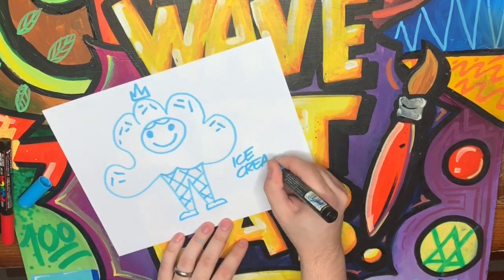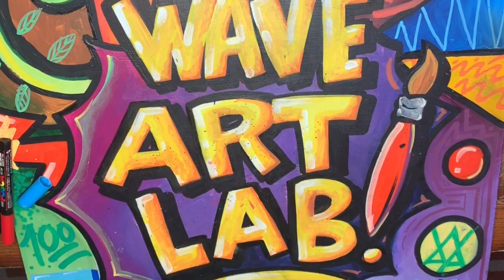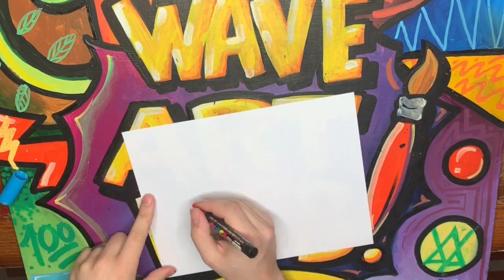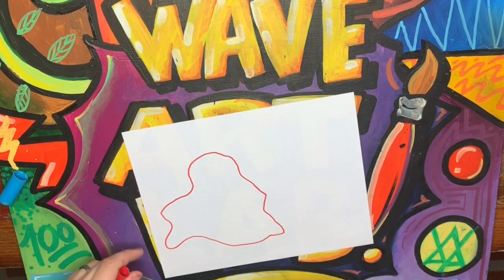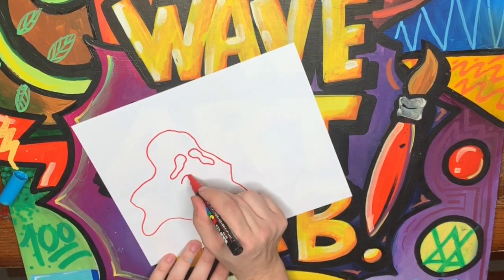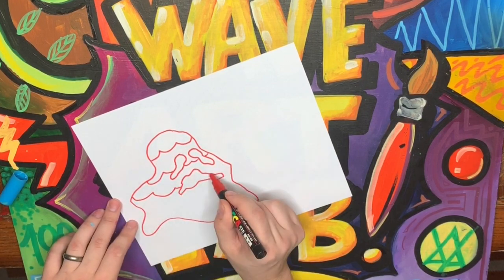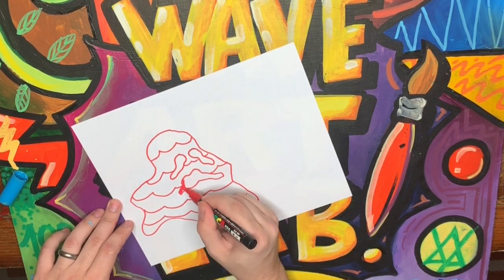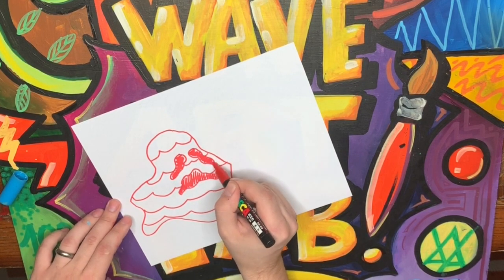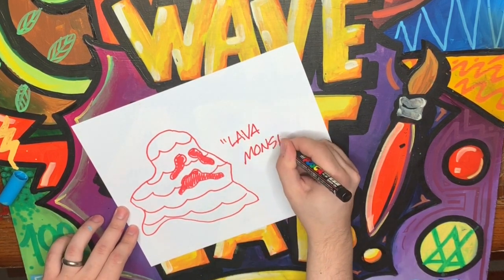That's my ice cream princess. For my next shape, I'm going to draw more of a big blob, and he looks kind of like a lava monster to me, so I'm going to give him some sad droopy eyes. I'm going to give him a sad smile like his face is just melting off — and there he is. There is my lava monster.